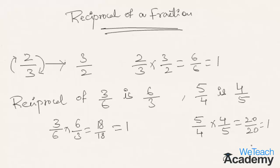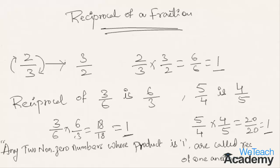If you observe these examples, we can say that the product of a fraction with its own reciprocal is always 1. Therefore, we can conclude that any two non-zero numbers whose product is 1 are called reciprocals of one another.